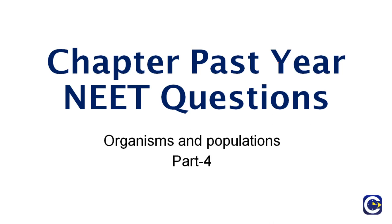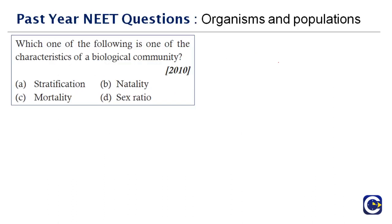Hi friends, today we are going to see the past year NEET questions for the chapter Organisms and Population. In this video we will cover Part 4. Let's begin with the first question, which was asked in the year 2010: which one of the following is one of the characteristics of a biological community?